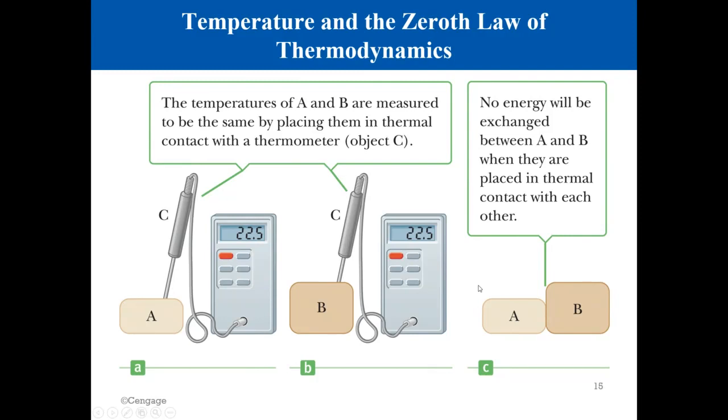The first thing that we will learn about is the zeroth law of thermodynamics. This is a very simple law. It is just logic. You don't need math to understand this law. So here you have two systems, system A and system B. If you measure the temperature for system A and it is 22.5 degrees Celsius, and you measure the temperature for system B and it is 22.5 degrees Celsius, this means the two systems are at the same temperature. So if you allow them to touch each other, nothing will happen, right? This is common sense.